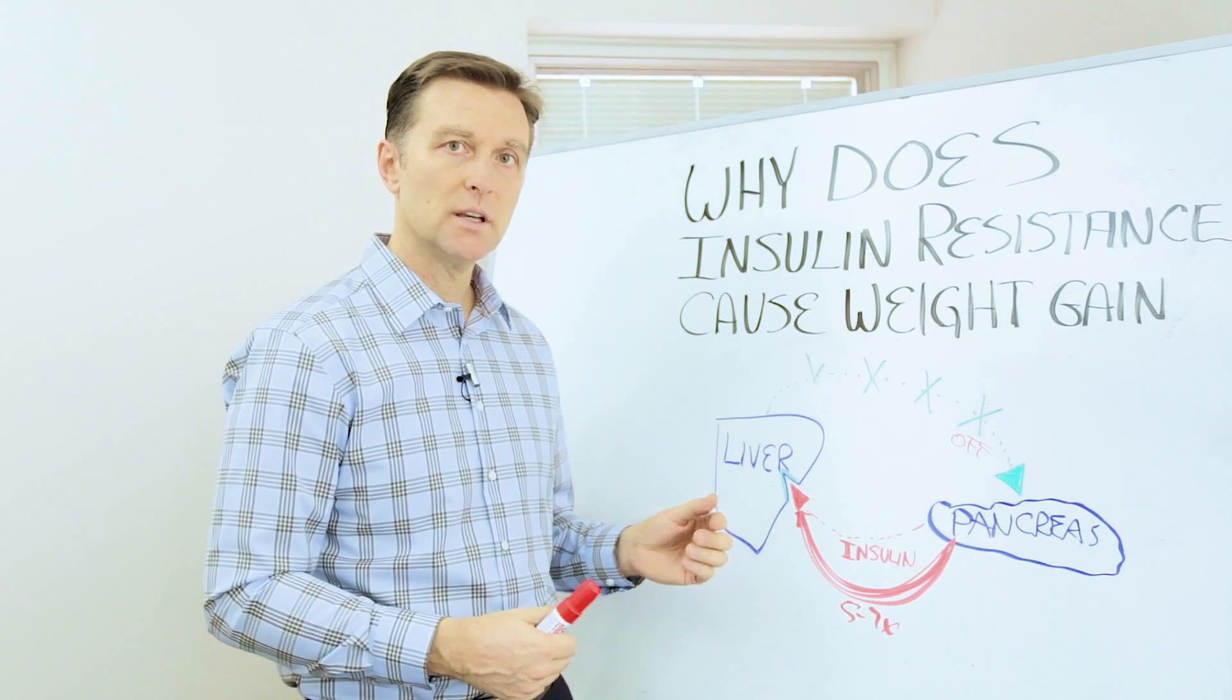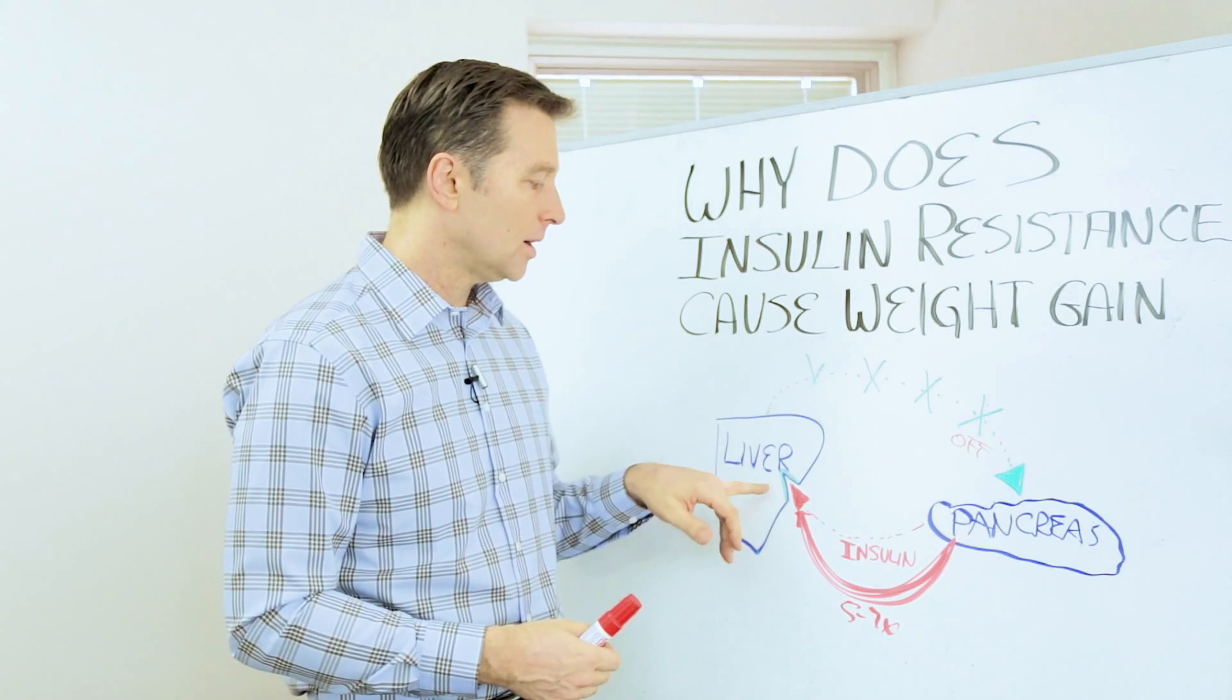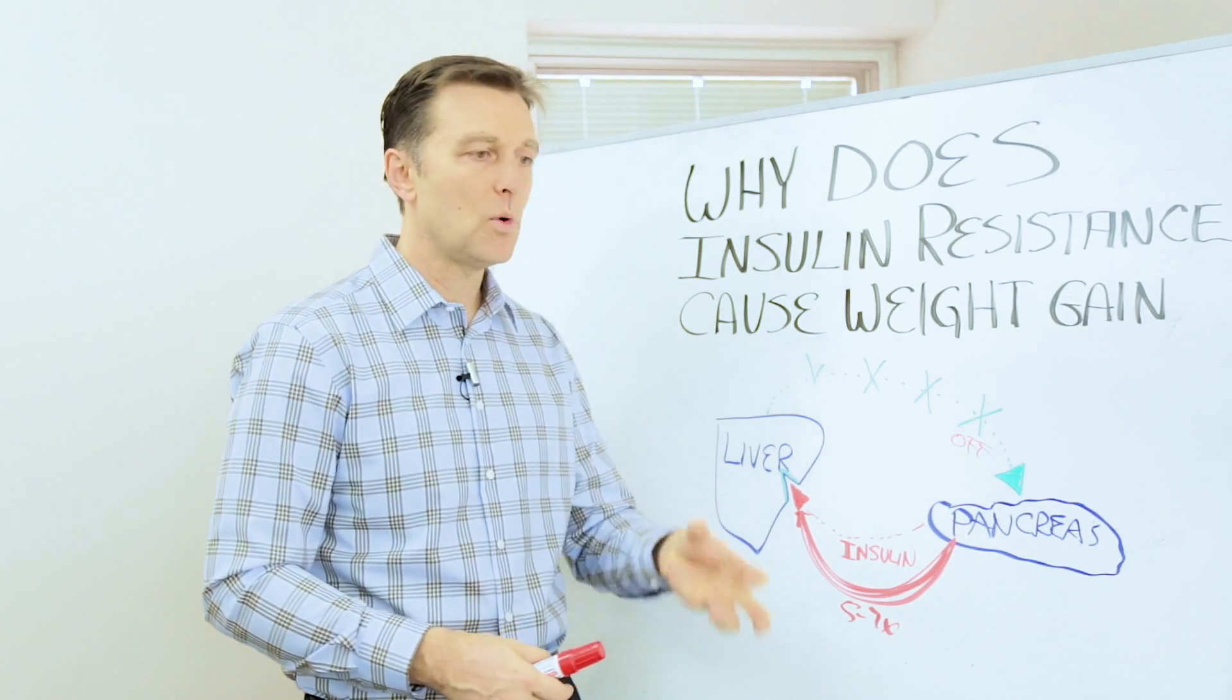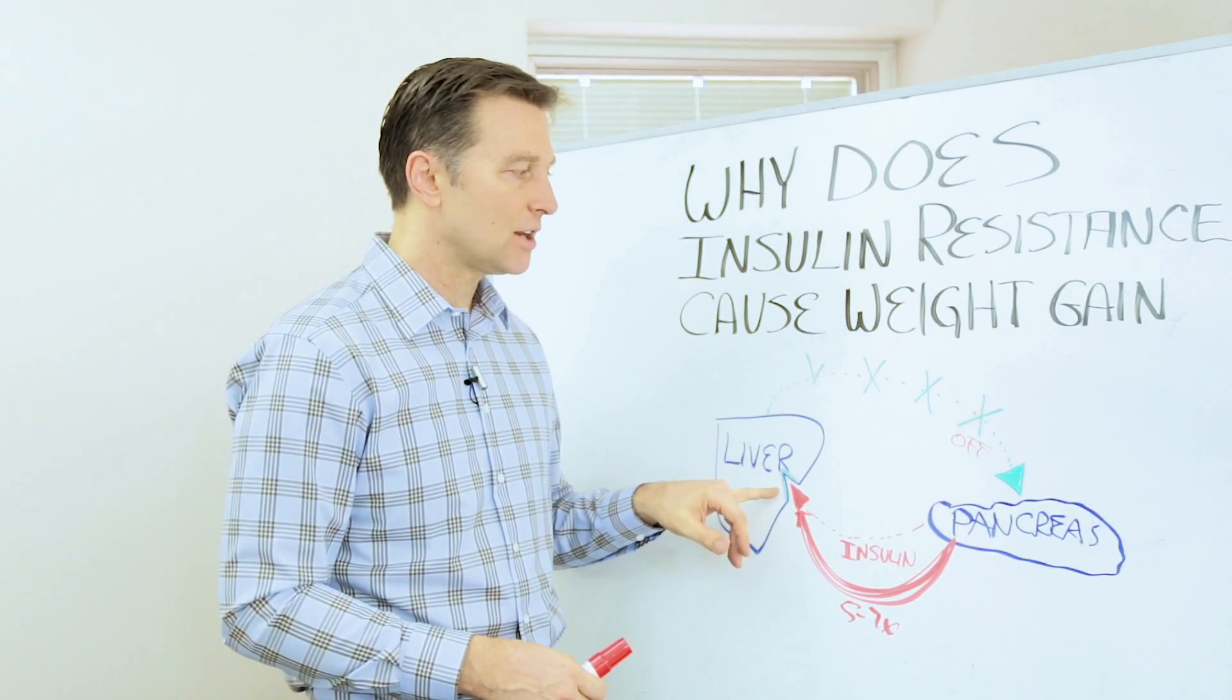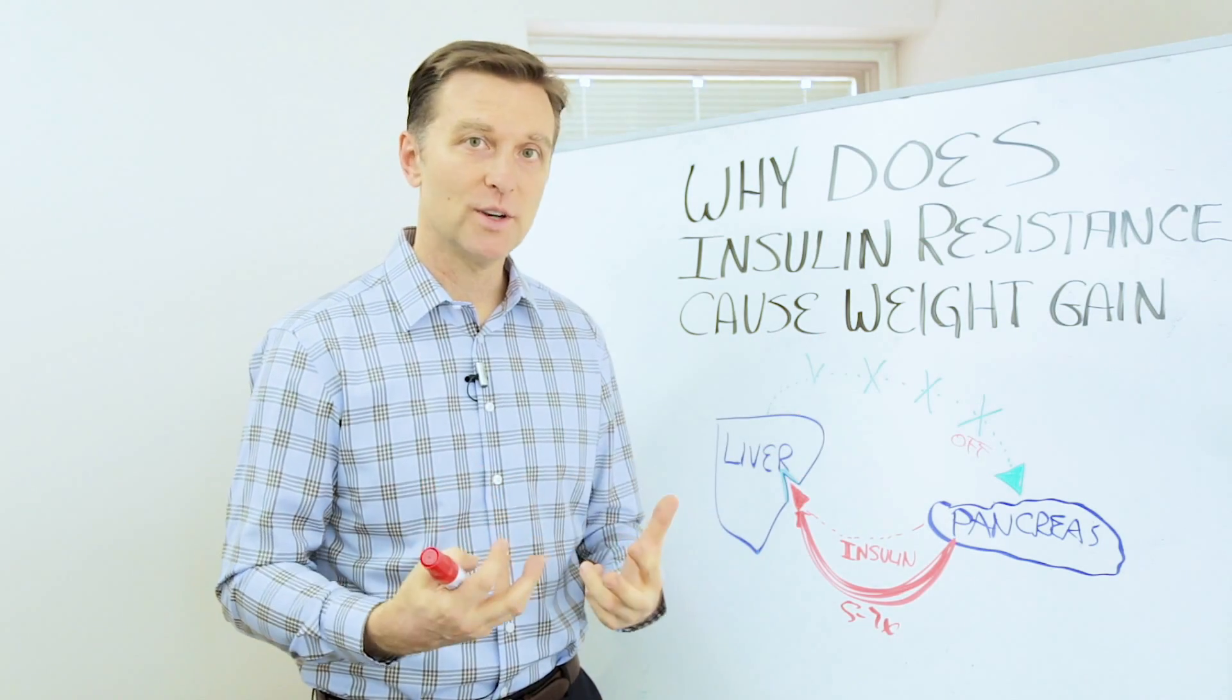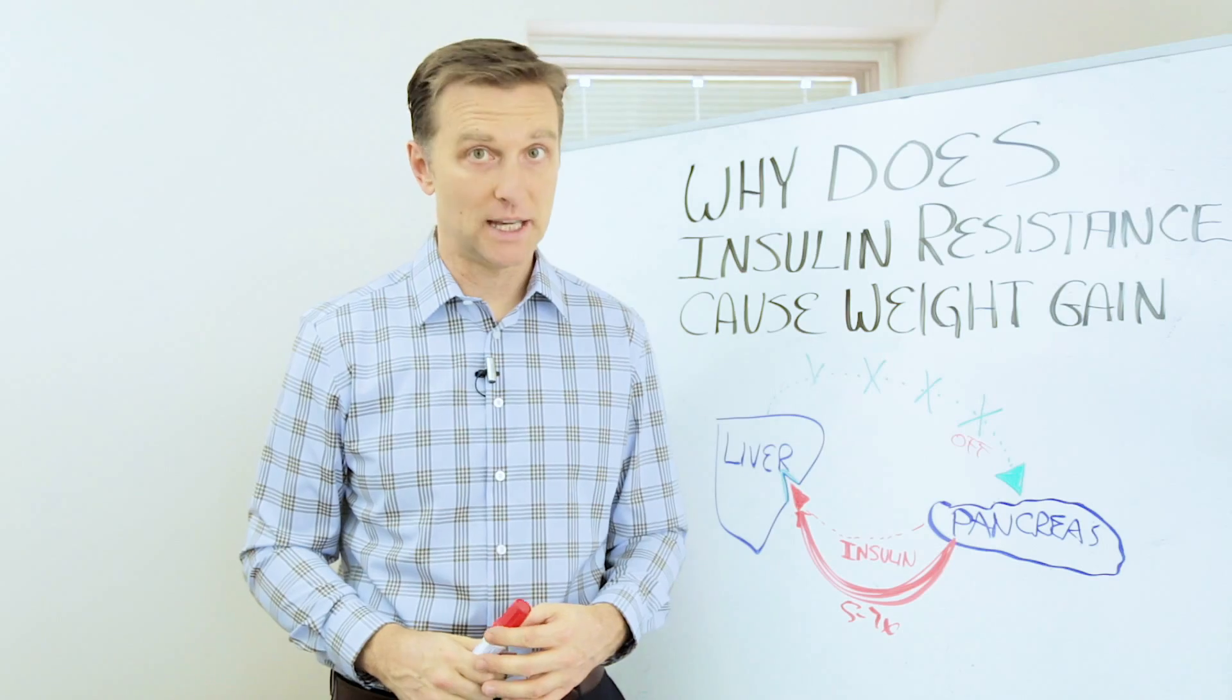And the medication for diabetes, especially type 2, would be called metformin. Metformin makes this receptor open up more. It helps it receive it. It actually opens up the channel to allow this thing to feedback. But what they don't really do is correct the reason why the insulin's spiking in the first place.